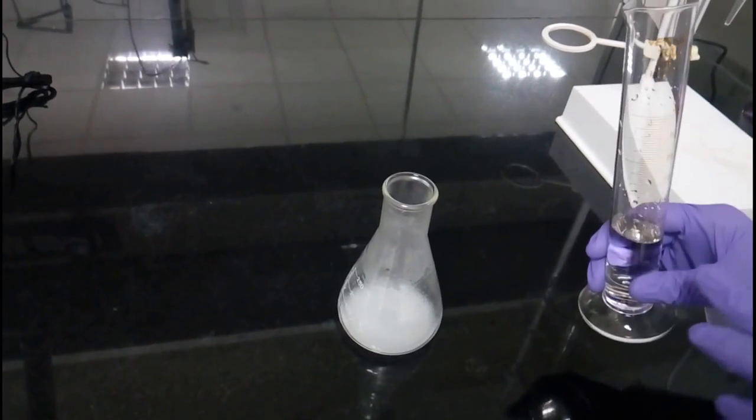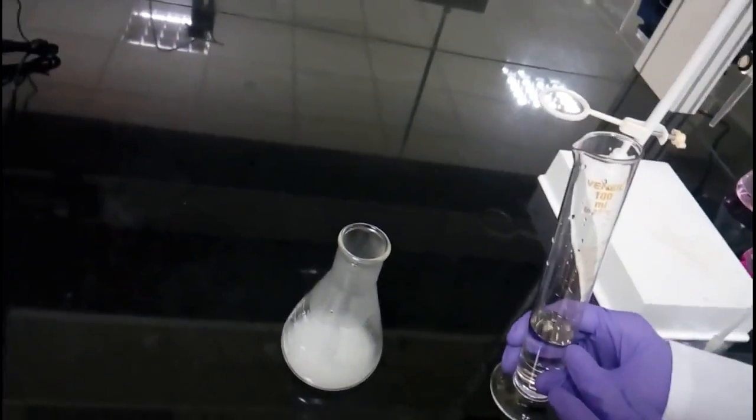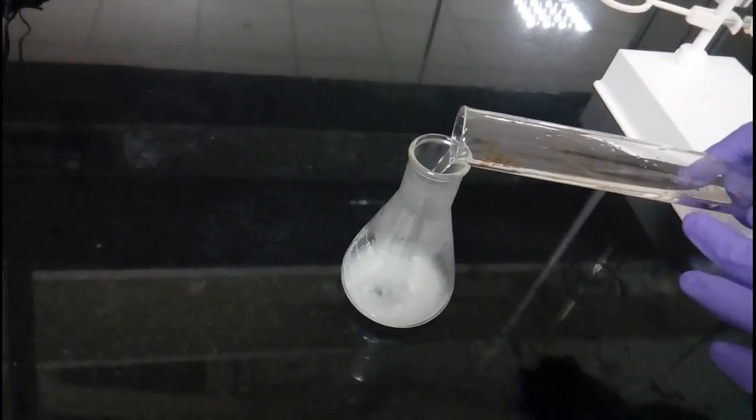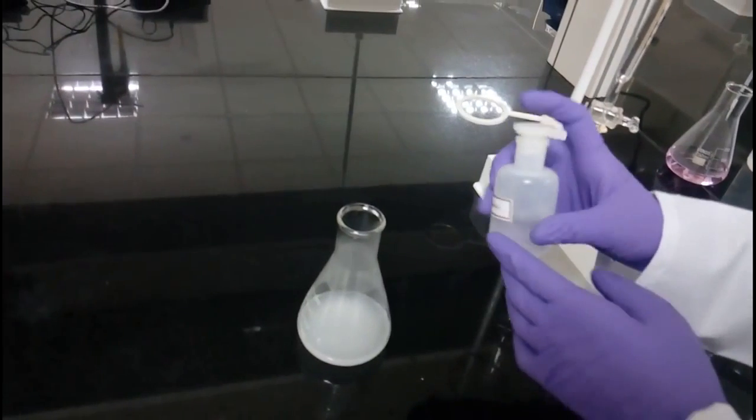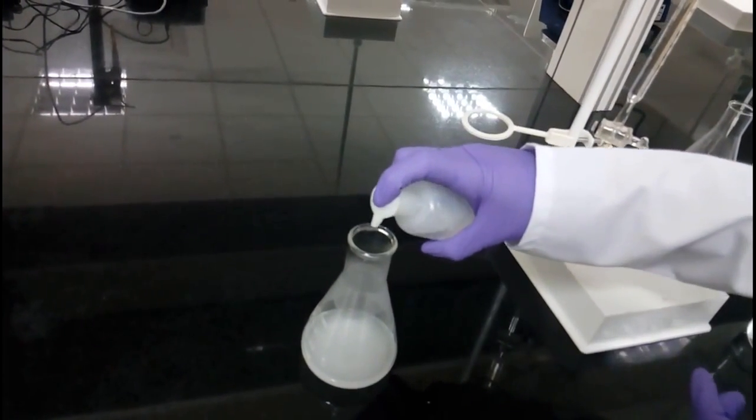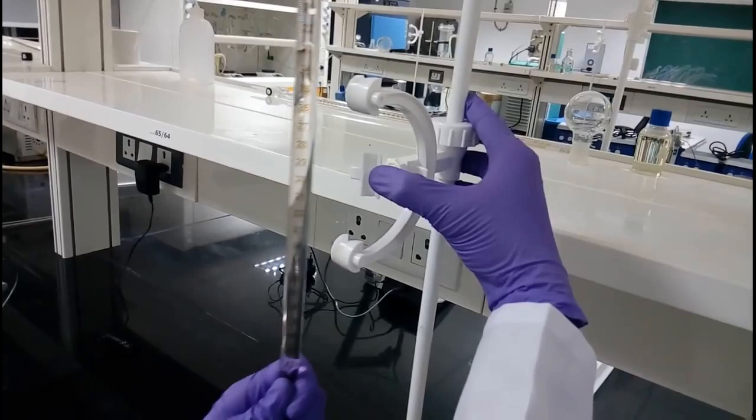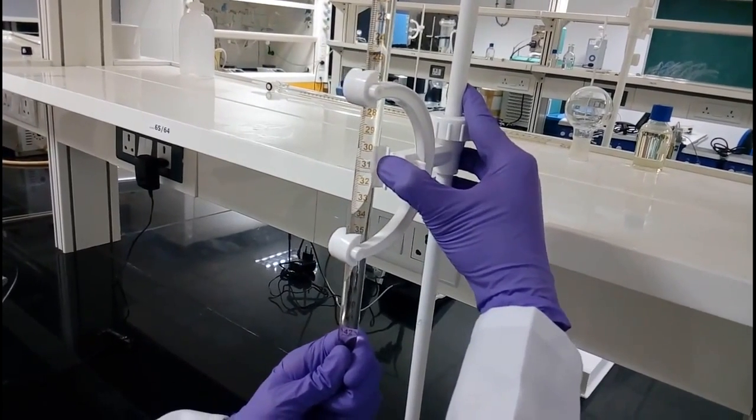Add 40 ml of distilled water to the conical flask using a measuring cylinder. Add 6 drops of phenolphthalein indicator to the conical flask. Clamp the burette to the stand.